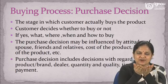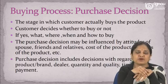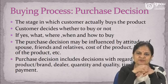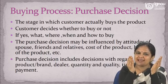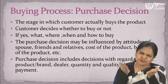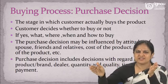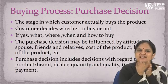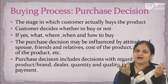Purchase decision includes decisions with regard to product, brand, dealer, quantity, quality, timing and payment. At this stage you are deciding whether to buy or not — if not, you may postpone or defer the purchase decision considering certain aspects. But if the answer is yes, then you have to decide what to buy, from where to buy, which company to rely on, and how to buy it.